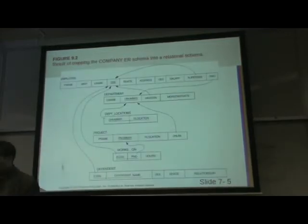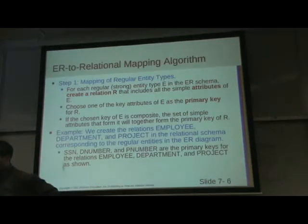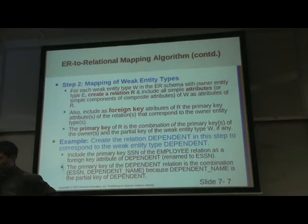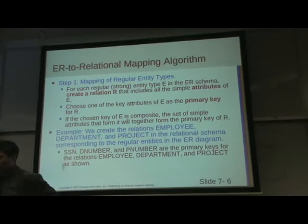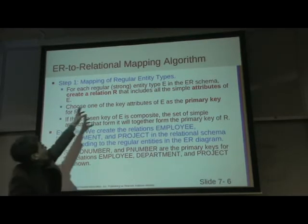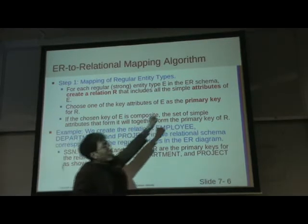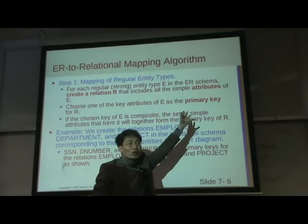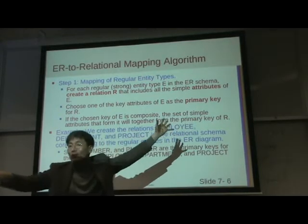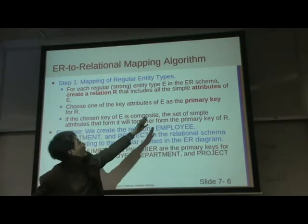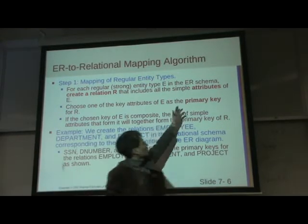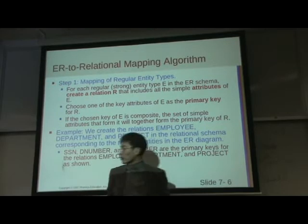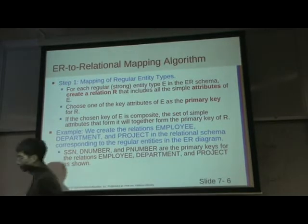The first step is: create the relation, then create the attributes — non-multi-value only — and select the primary key.